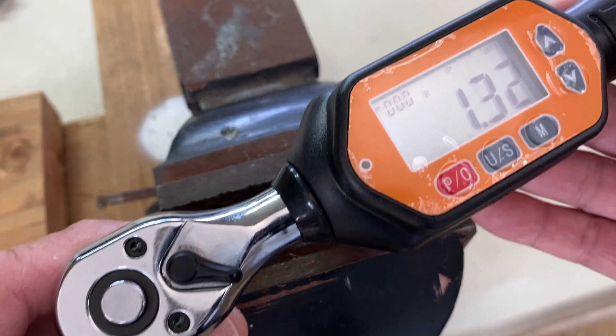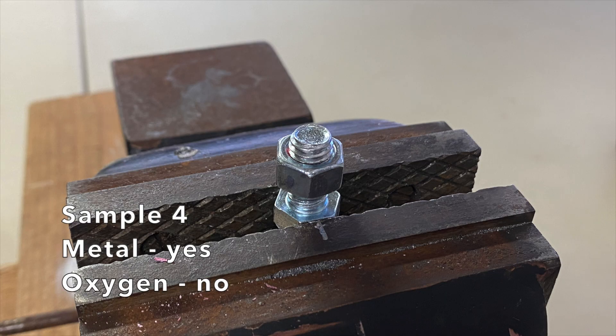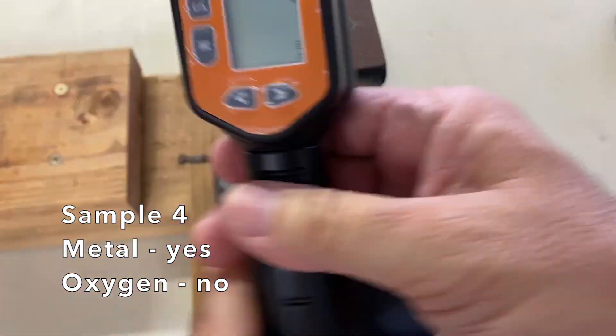Let's use this digital torque wrench to see how strong the bonds are. First, Sample 4. An impressive 25.33 foot pounds.